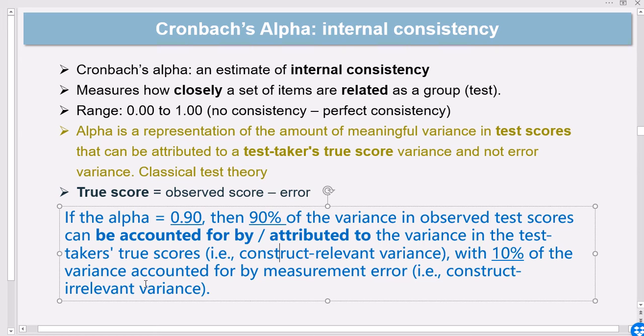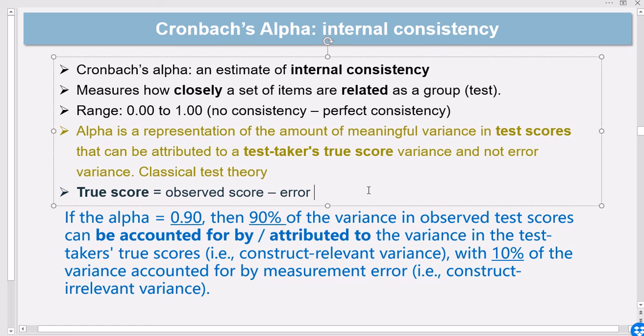This is construct-irrelevant variance, whereas the other part, which is not accounted for by the error, is construct-relevant variance. Those are the terminologies that we use in educational measurement and language testing or language assessment.